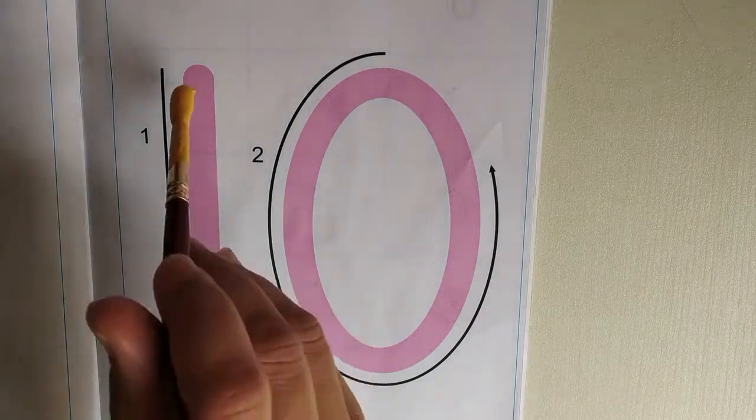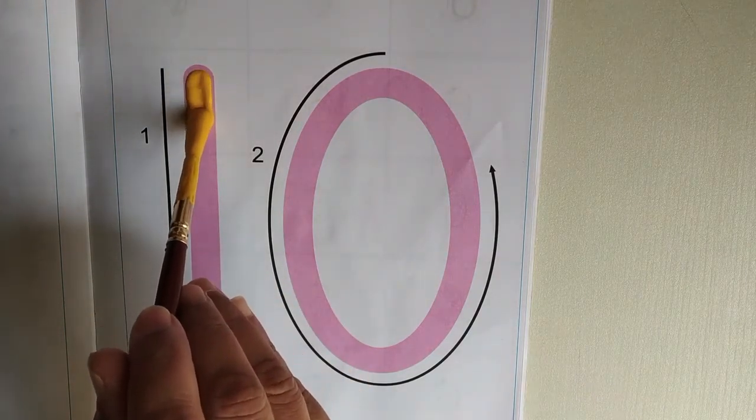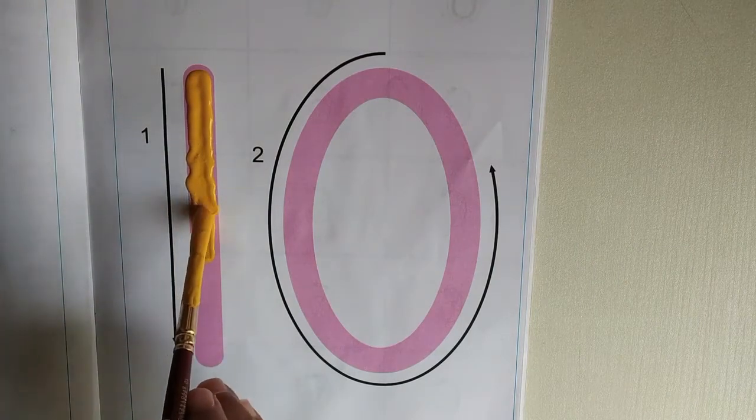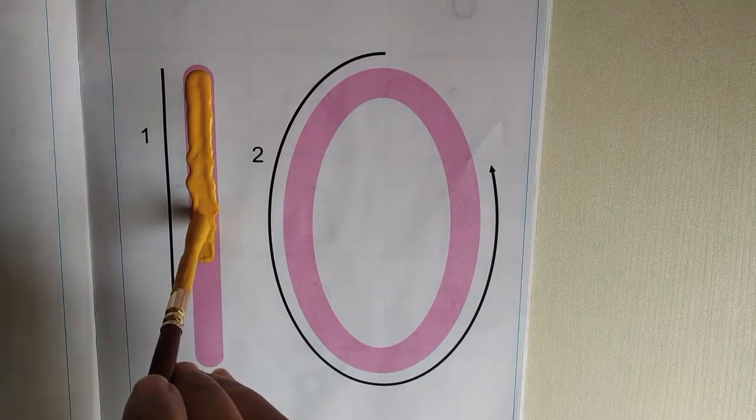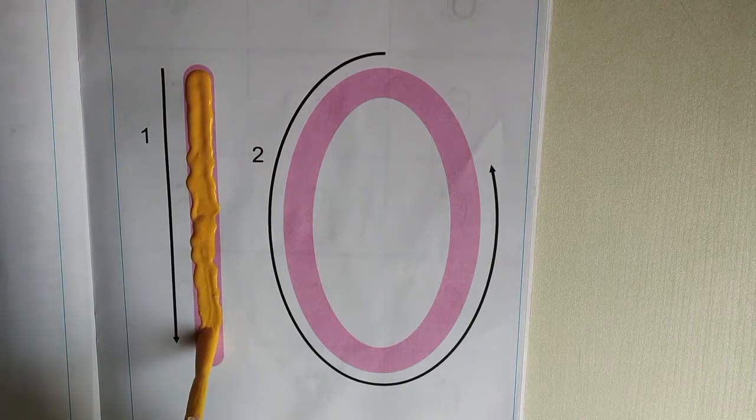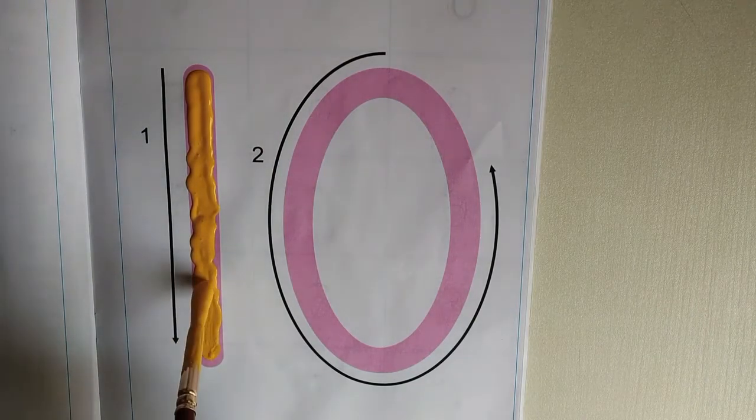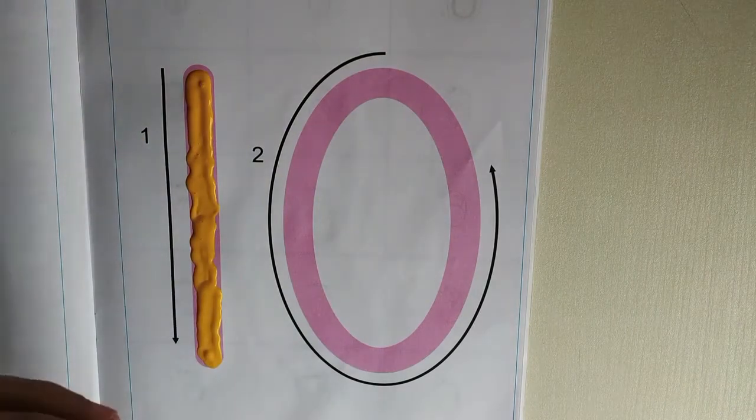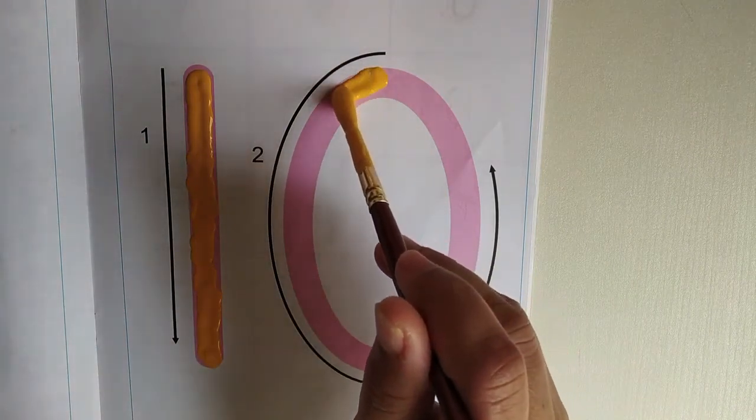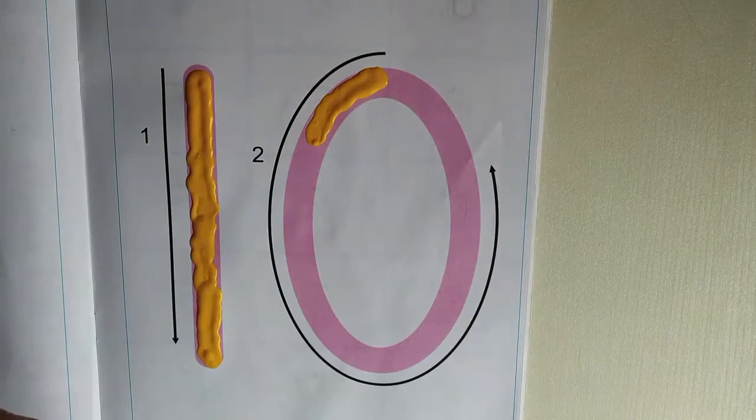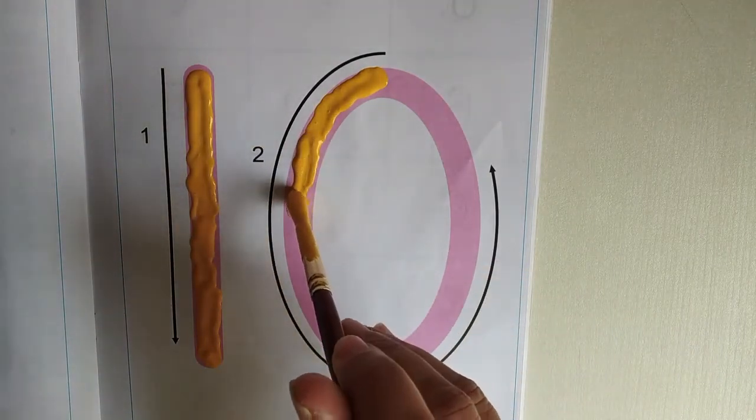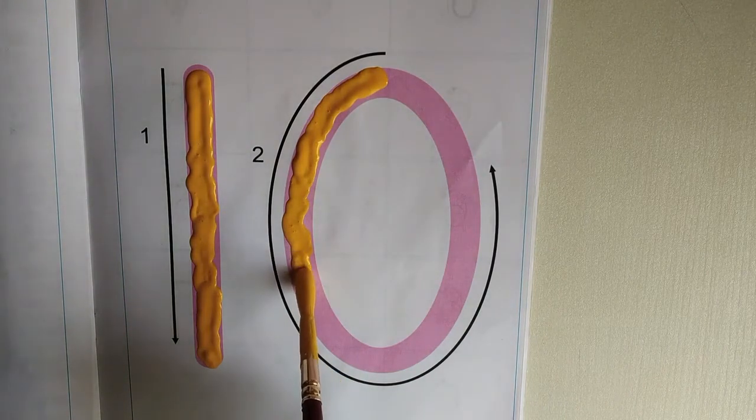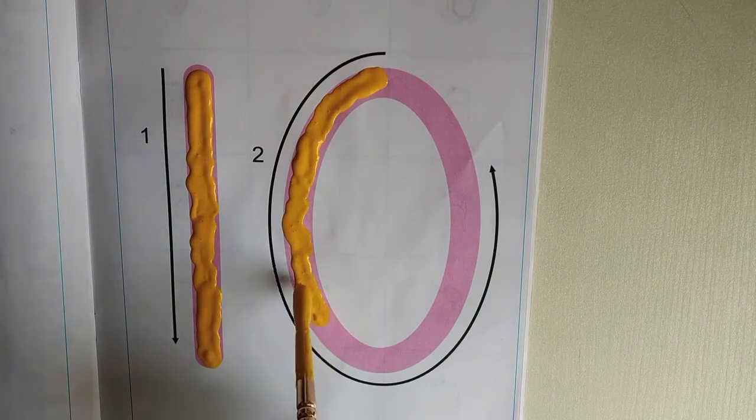What I did in this is, look carefully. With one brush, with one color, what I've done children, I've taken the brush, dipped it in one color and nicely applied on the number. Very thick paint I've applied on the number.